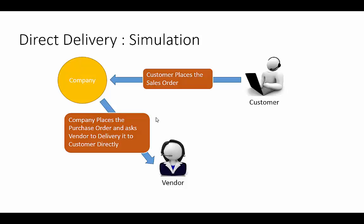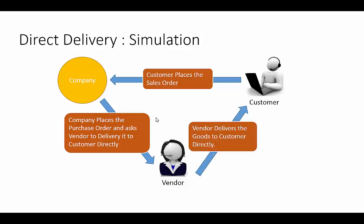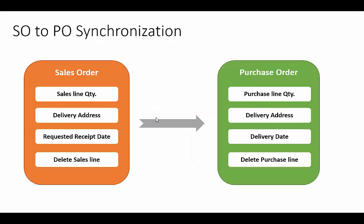The vendor delivers the goods to the customer directly and informs the company about the delivery. When we create a direct delivery purchase order, certain information such as sales line quantity, delivery address, and requested ship date will get copied to the purchase order.